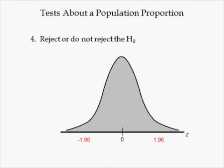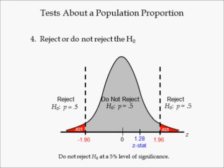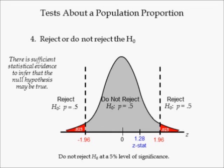In step 4, we determine whether the null hypothesis is rejected or not. Since the critical values are plus and minus 1.96, we plot them on the number line. These values define the reject and do not reject the null hypothesis regions. The area to the left of negative 1.96 is equal to half of the significance level, while the area to the right of 1.96 is equal to the other half. Since the sample data yielded a z-stat equal to 1.28, it is plotted on the number line between 0 and critical value 1.96. Hence, we cannot reject the null hypothesis at the 5% level of significance, since the z-statistic is between the two critical values. This means there is sufficient statistical evidence to infer that the NSC's claim that 50% of accidents are caused by drunk driving appears to be valid.